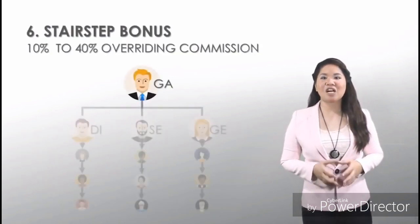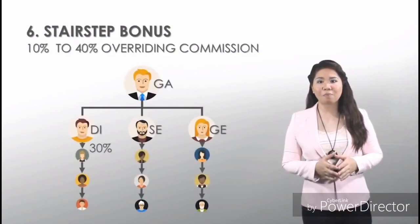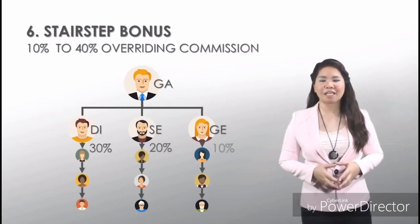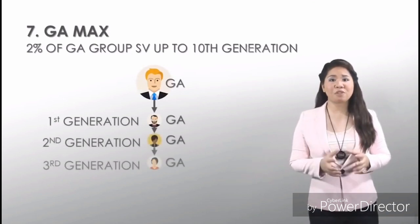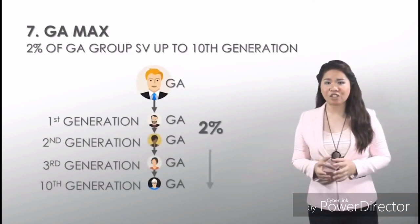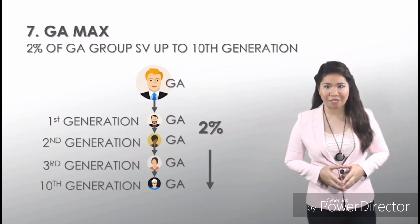Sixth is the Stair Step Bonus. Earn commission on all group product repurchases and Global Packages sold down the line. Seventh is the GA Max. Earn 2% of your GA's group sales value up to 10th generation with roll-down roll-up compression.